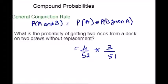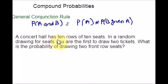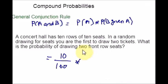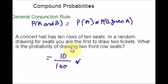Here is another example. A concert hall has 10 rows of 10 seats. In a random drawing for seats, you are the first to draw 2 tickets. What is the probability of drawing 2 front-row seats? There are 10 rows of 10 seats, so 100 seats total. The front row has 10 seats, so the first draw is 10 out of 100. After choosing one seat, 9 front-row seats remain out of 99 total seats. So the second probability is 9 over 99.